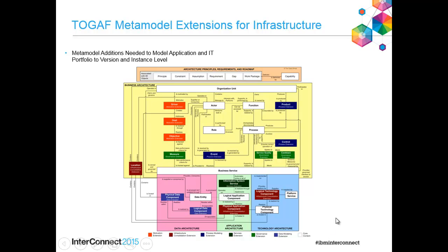If you look at the TOGAF Metamodel — the Extended Content Metamodel — you'll see you have physical application components and physical technology components. This Extended Content Metamodel is a guide; it's not a precise metamodel meant to be deployed, and most folks do extend it to capture aspects of the organization. It's a good guide. What we've done is extend it so that, for example, a physical application component like System Architect gives you more information when the rubber hits the road in your organization.